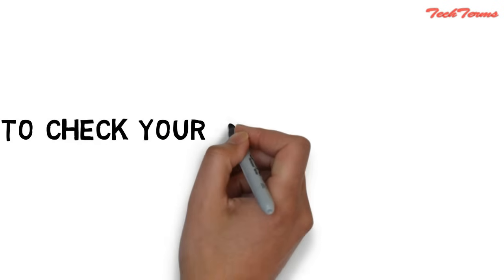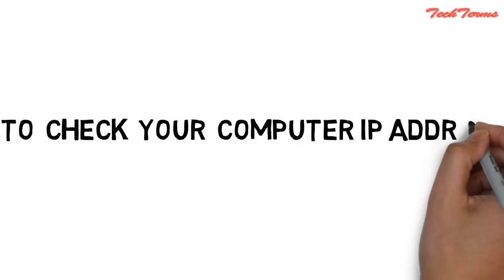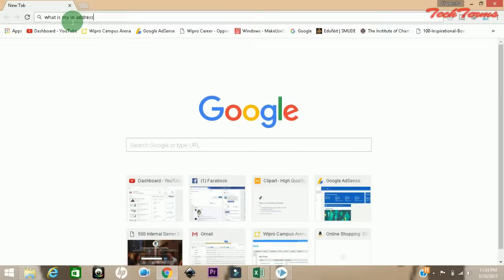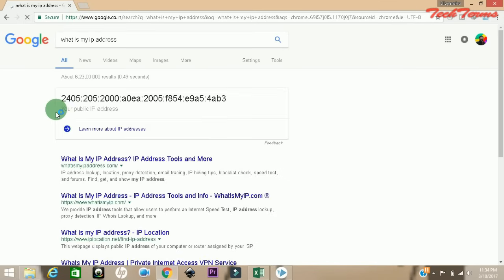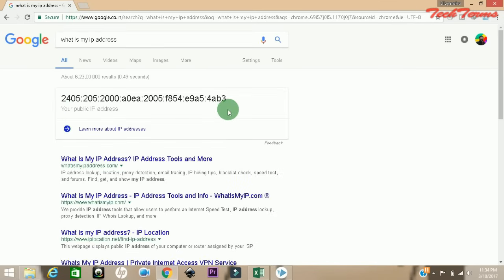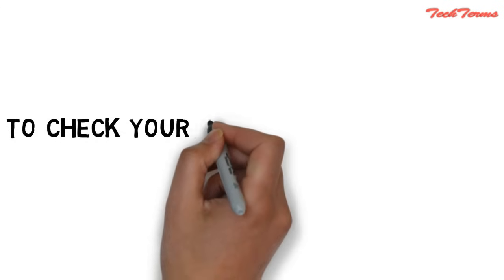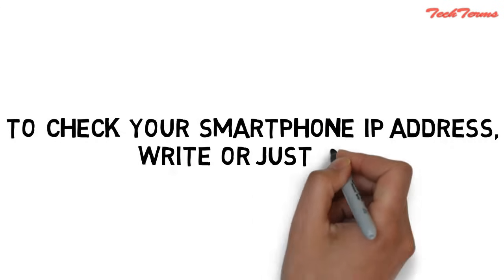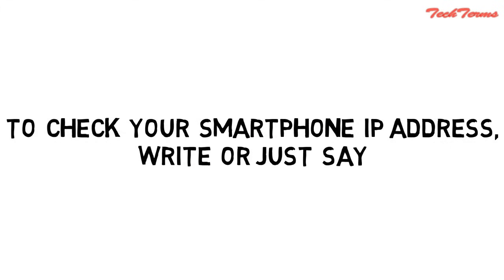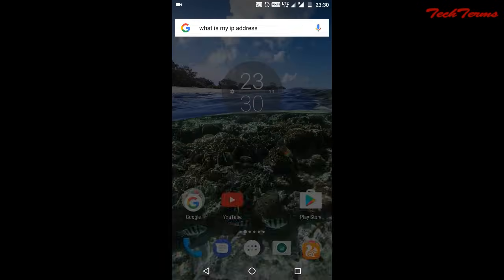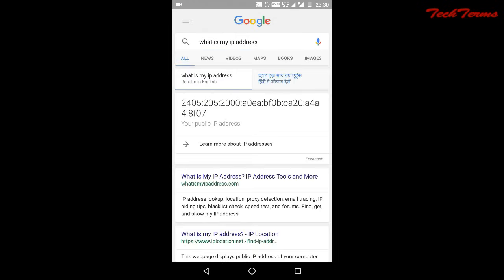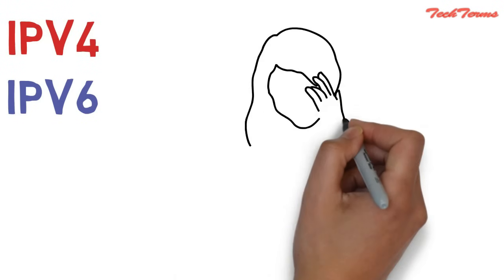To find your computer's public IP address, type 'what is my IP' in www.google.com. Google will tell you your computer's public IP address. Similarly, to find your smartphone's public IP address, write or just say 'what is my IP' on your smartphone. Google will tell you your smartphone's public IP address.